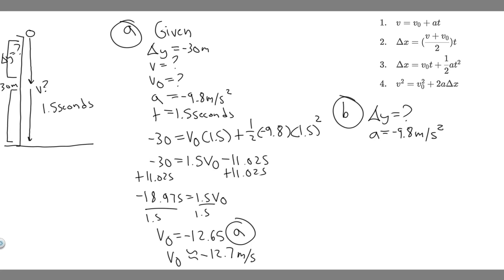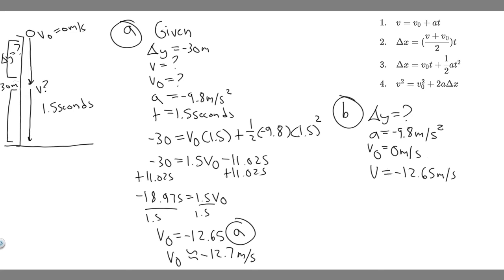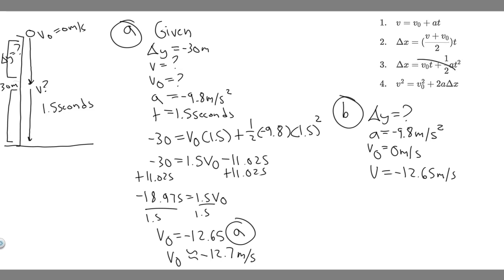At the beginning of the upper interval, the object is released from rest, so v-sub-0 equals zero. At the end of that interval — right at the 30-meter mark — the velocity is exactly what we solved for in part A: minus 12.65 m/s. So we have v = minus 12.65, v-sub-0 = 0, and a = minus 9.8. Since we don't know t, we use the equation v² = v-sub-0² + 2a·delta y, which doesn't contain t.